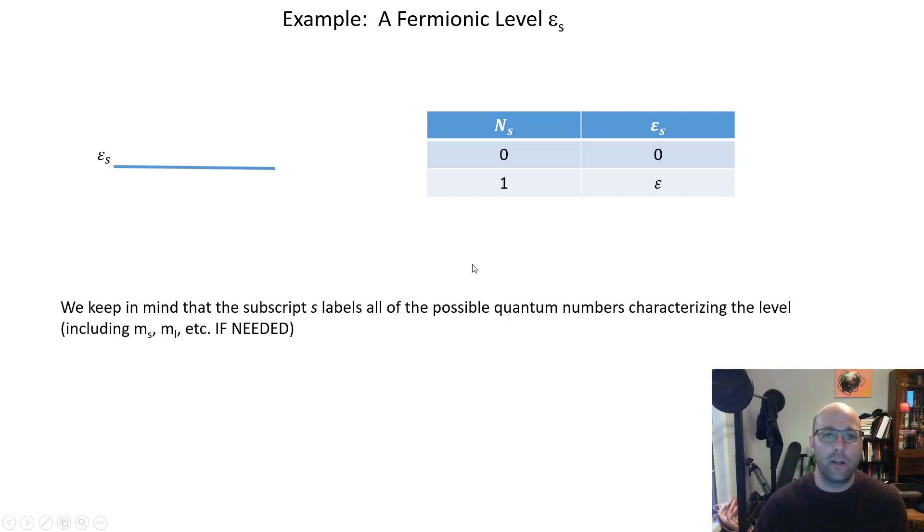Let's take a final look at where we're going with this in the next lectures. We just want to think about a level e_s and we're going to occupy this level with fermions, and what I just want to do is enumerate all of the possibilities of n_s and ε_s that could be in this level. You could have no particles in the level and therefore no energy, or you could have one particle in the level with epsilon worth of energy. So there are very limited possibilities for a fermionic level, and this is going to allow us to calculate the grand partition function in the next mini lecture.